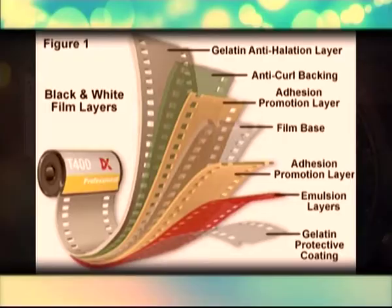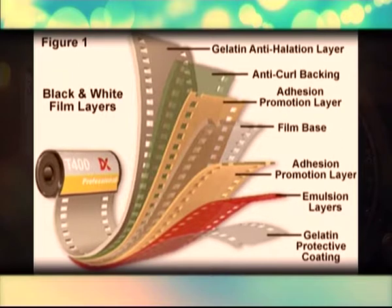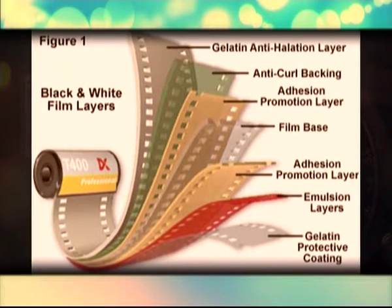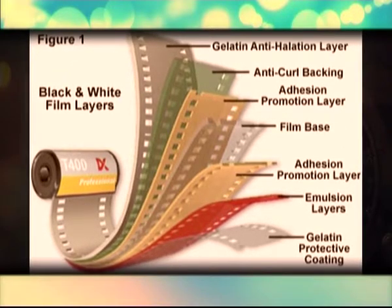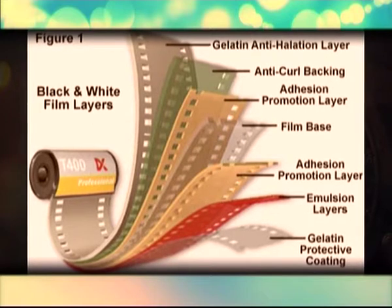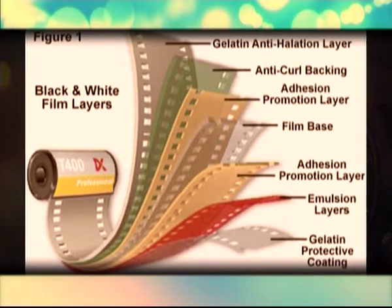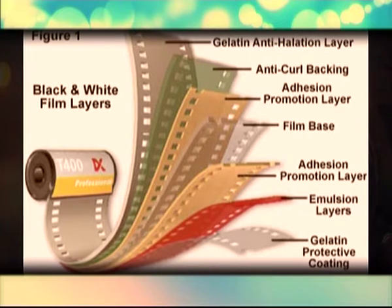Black and White: Black and white film is sensitive to most of the visible spectrum of light — panchromatic — along with some ultraviolet. It is more sensitive to blues, which means skies tend to get overexposed.